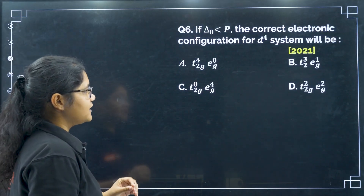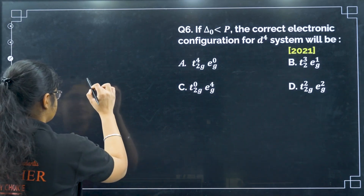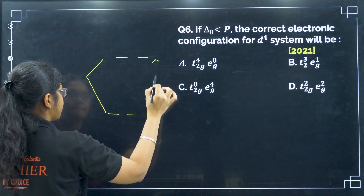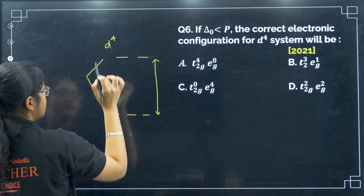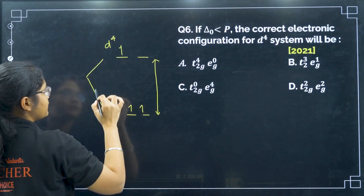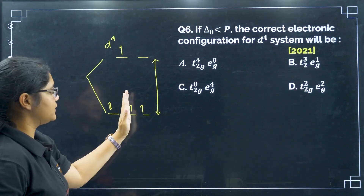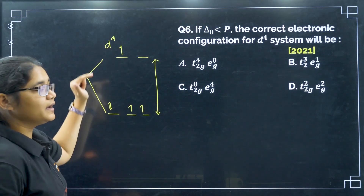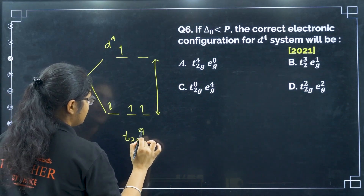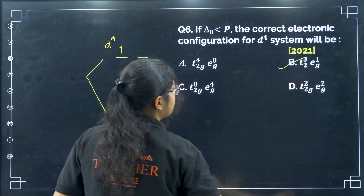Next, if ΔP is less than ΔO, which is less than P, what is the correct electronic configuration for a D4 system? Since ΔO is less than P, the splitting is very small, meaning electrons will not pair. For D4, 3 electrons go into T2G and 1 electron is excited to EG. So the configuration is T2G3 EG1 — that is option B.